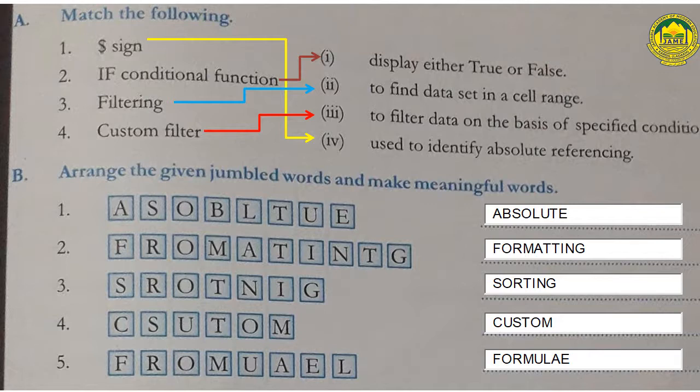Number three: filtering - answer two: to find data set in a cell range. Number four: custom filter - answer three: to filter data on the basis of specified conditions.